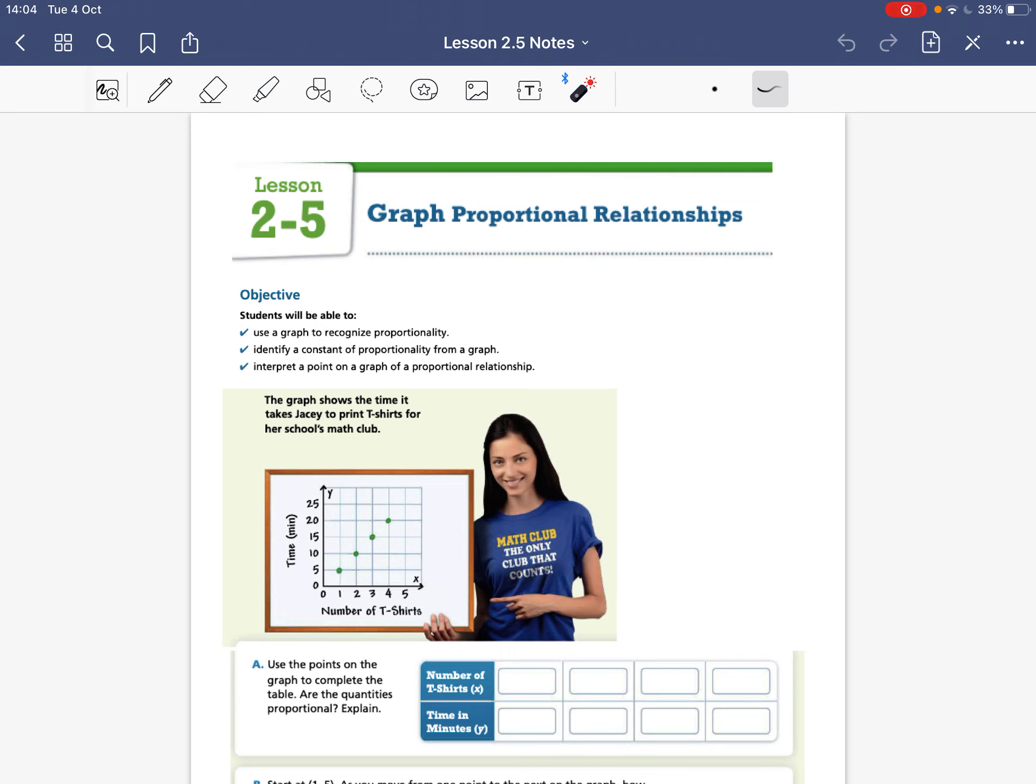We're going to use graphs to recognize proportional relationships, or proportionality. We're going to identify a constant of proportionality by a graph, and we're going to interpret a point on a graph of a proportional relationship. So proportional means for every value that changes, the other value changes at the same rate. And we can model this as y equals kx, where k is that constant of proportionality.